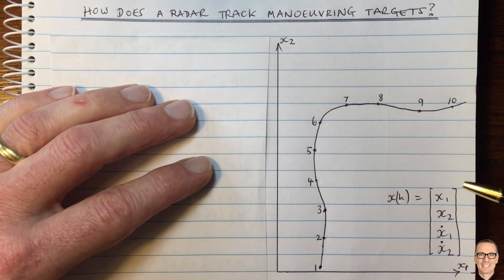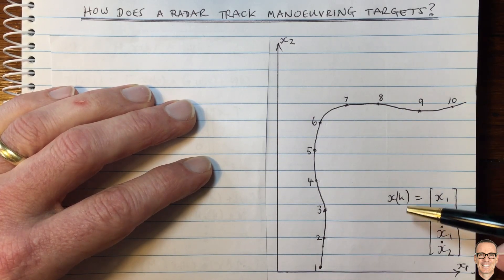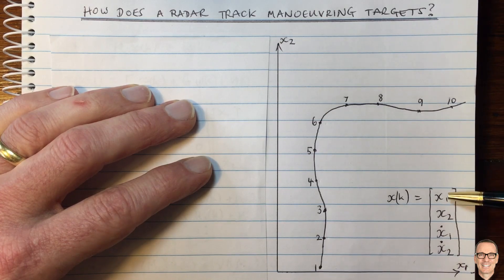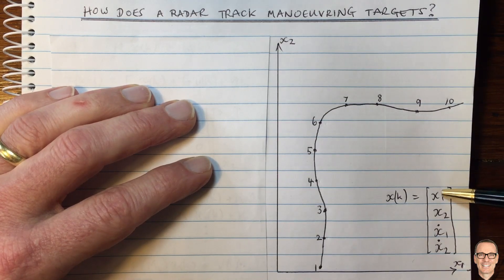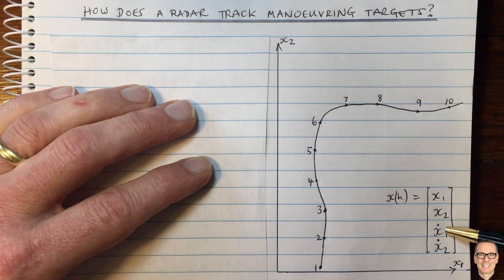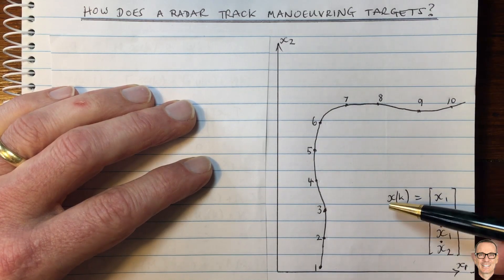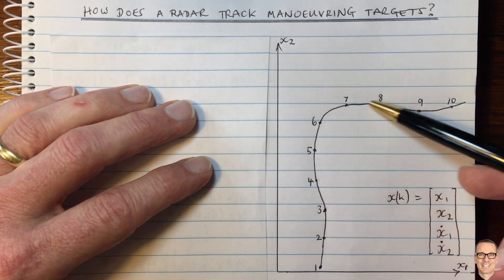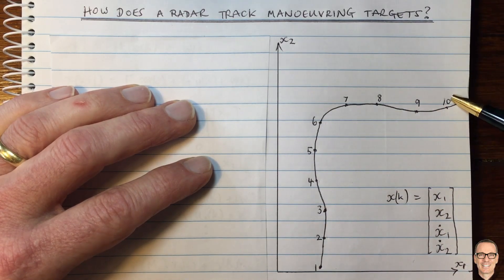So now let's think about a model for this and it helps us to define a state. We're going to define this state vector which includes the x1 position, the x2 position and the velocity in the x1 direction and the velocity in the x2 direction. So this is what we call a state for the location of the target, the actual location.